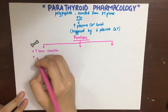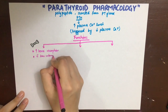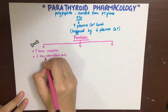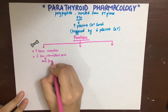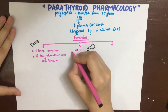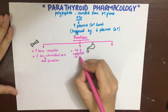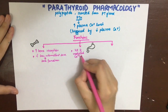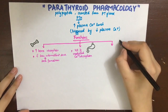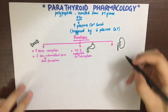If parathyroid hormone is supplemented as low intermittent doses, it can actually stimulate bone formation. On the GIT, not directly but indirectly with the help of vitamin D, it causes increased absorption of calcium.